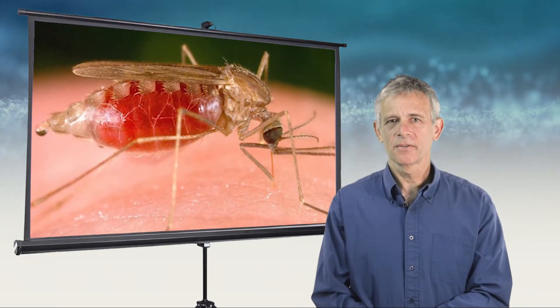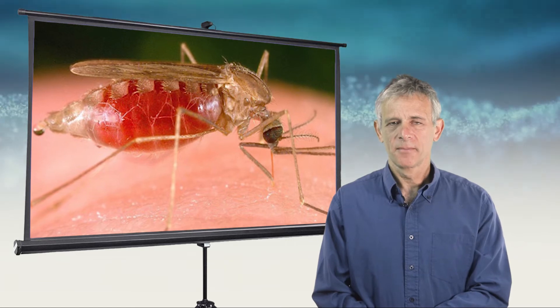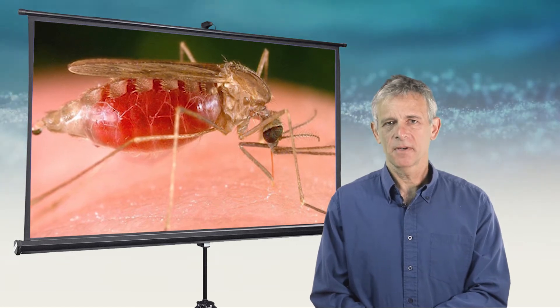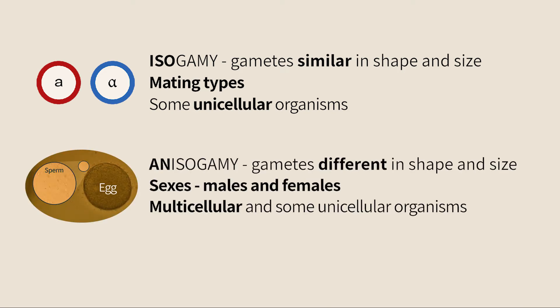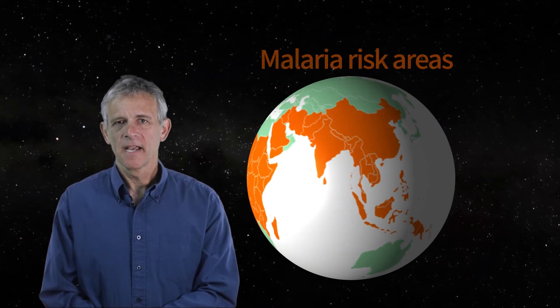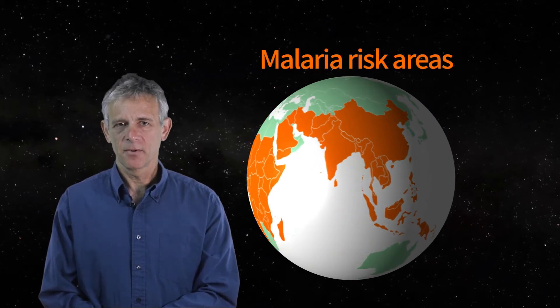Organisms from all eukaryotic groups produce sexually. We already described baking yeast, which are unicellular fungi that produce isogamic gametes. In this video we will discuss the malaria parasite Plasmodium, which is an anisogamic protist. We chose it because of its fascinating life cycle and its medical importance.